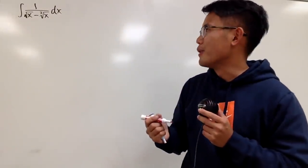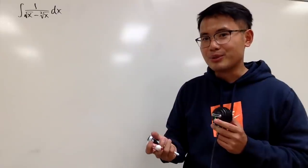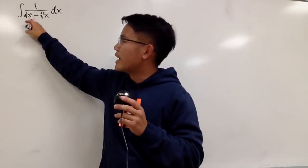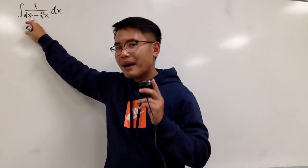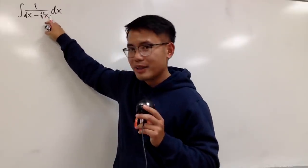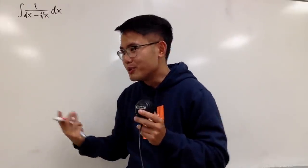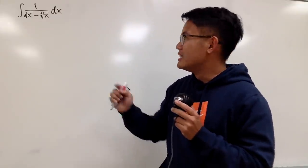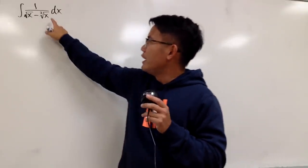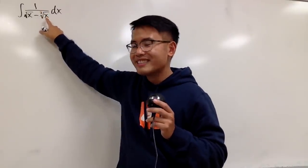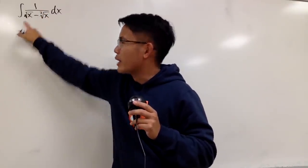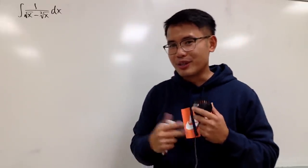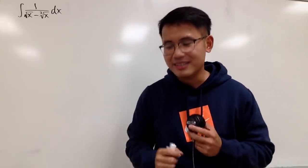Here is the deal. You may want to try some substitution, maybe let u equal to the square root of x. But in that case, the square root and the cube root are not going to work out so well. Similarly, if you let u equal to the cube root of x, this right here will be bothering you as well. The expressions are not just going to cancel things out nicely.